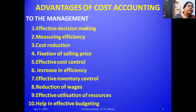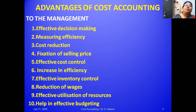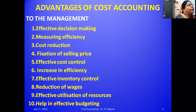The second point is measuring efficiency. With the help of cost accounting, management can set a budget or standard — a target — for various elements of cost like material, labor, or other expenses, and then compare the standard cost with the actual cost. This comparison measures efficiency: whether actual cost is more than, less than, or on par with the standard.